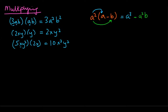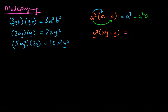Another example: y cubed times (xy minus y). First, y cubed times xy gives xy to the 4th. Then y cubed times negative y gives negative y to the 4th. So the result is xy to the 4th minus y to the 4th.